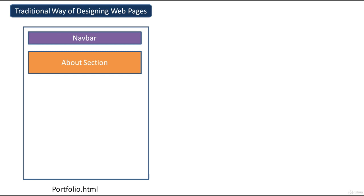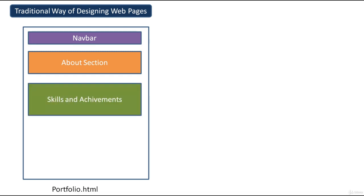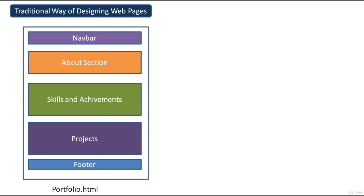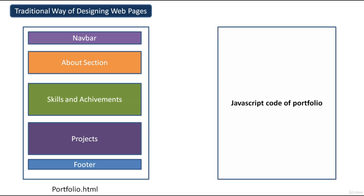We are using the example of a portfolio webpage. This is portfolio.html. In every portfolio we commonly have five things: a navbar, an about section about the developer, skills and achievements, projects, and at the end a footer. If you want to perform any interactions on this portfolio.html webpage, we have to create a portfolio.js JavaScript file and write all the JavaScript code related to elements in the portfolio.html file. This is the normal way of creating a webpage using traditional HTML and JavaScript.